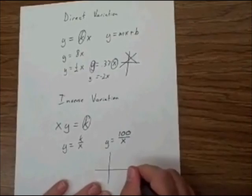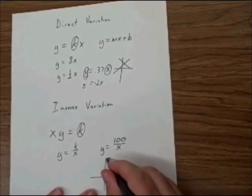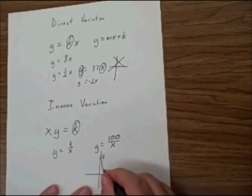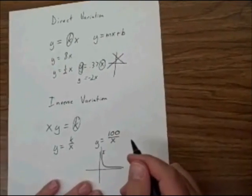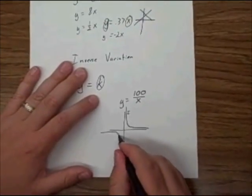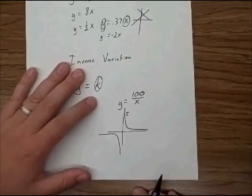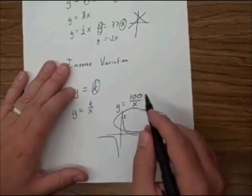So the graph on this one, at least in quadrant one over here where you have the positive, is going to come down from very high up and then curve out and get closer and closer to zero without ever getting to zero. Now, if you graph this on the graphing calculator, it will graph the other half of it, but that's not necessary for our real-world situation. So keep in mind that the inverse variations make a graph that look like this.